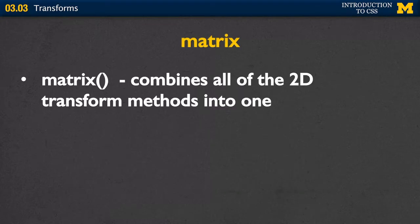The next and final option is matrix. When you use matrix you can combine all of the 2D transform methods into one command at once. I never use this because I find it far too confusing to remember which value is scale, which is rotate, which is skew. Unless you feel really confident with your CSS3, I would avoid matrix and use each of the other individual transforms one at a time.